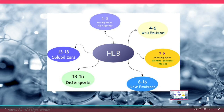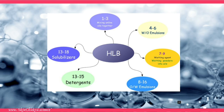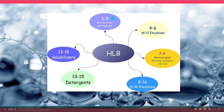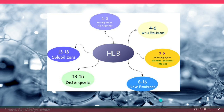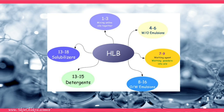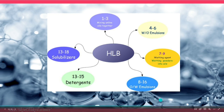This chart approximately shows which HLB range corresponds to which surfactant property and function. The ranges overlap — for example, wetting agents and oil-in-water emulsifiers overlap, and solubilizers and detergents overlap almost completely. Some ingredients like caprylyl/capryl glucoside, which on its own is a foaming detergent, is also used in many solubilizer blends. You cannot strictly separate molecules, but you can still put them into approximate categories.